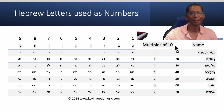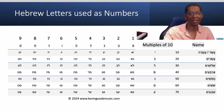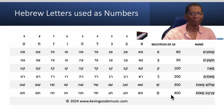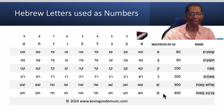Over here we have the multiples of ten — like in English it's ten, twenty, thirty, forty, fifty, and so forth — that's what this is in Hebrew. So right here: Yud is ten, Kaf is twenty, Lamed is thirty, Mem is forty, Nun is fifty, Sameh sixty, Ein is seventy. And if we keep going forward: Peh is eighty, Sarik ninety, Kuf a hundred, Resh two hundred, Shin is three hundred, and Tav is four hundred.